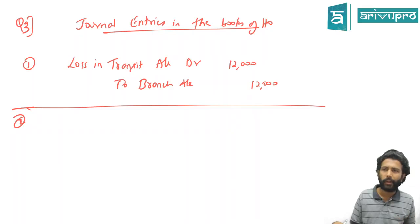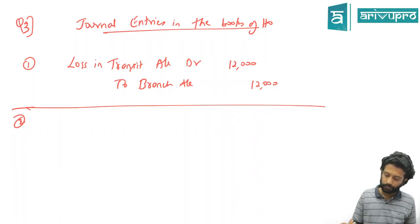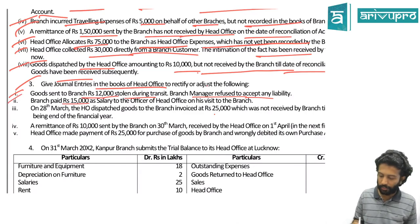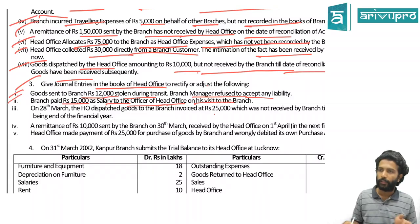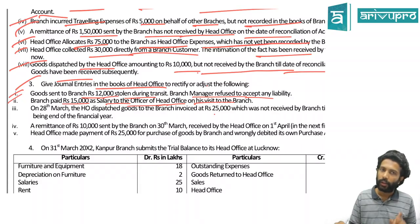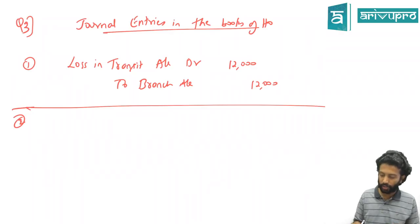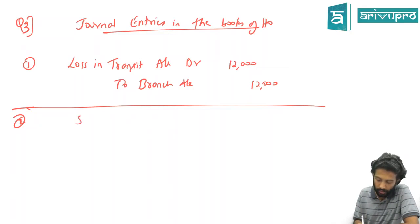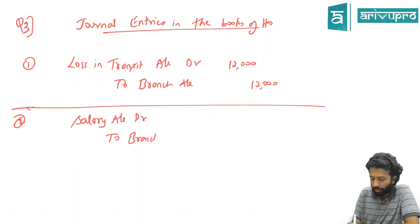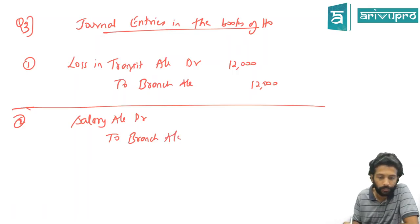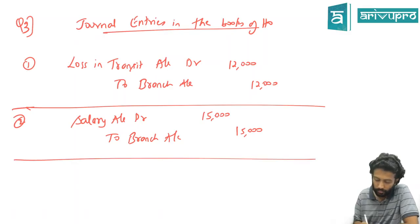Second scenario in HO books: branch paid 15,000 salary to an HO official on his visit. Salary belongs to HO, but branch paid. HO cannot credit cash since they did not pay. HO entry: Salary Account debit to Branch Account 15,000.